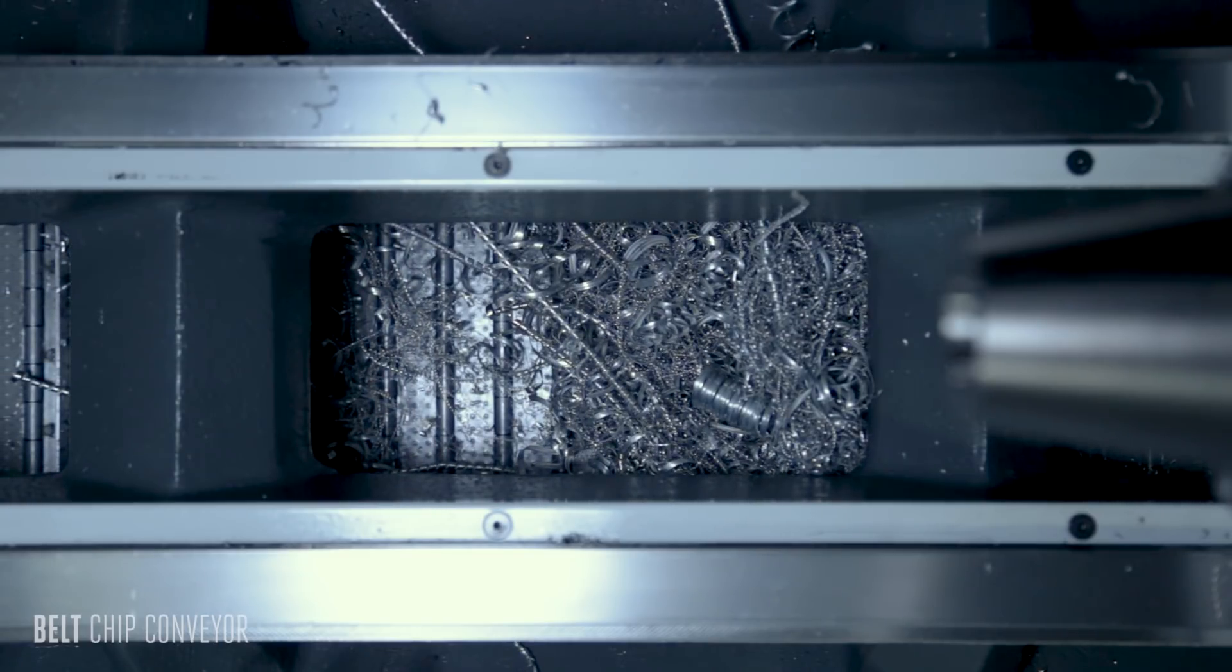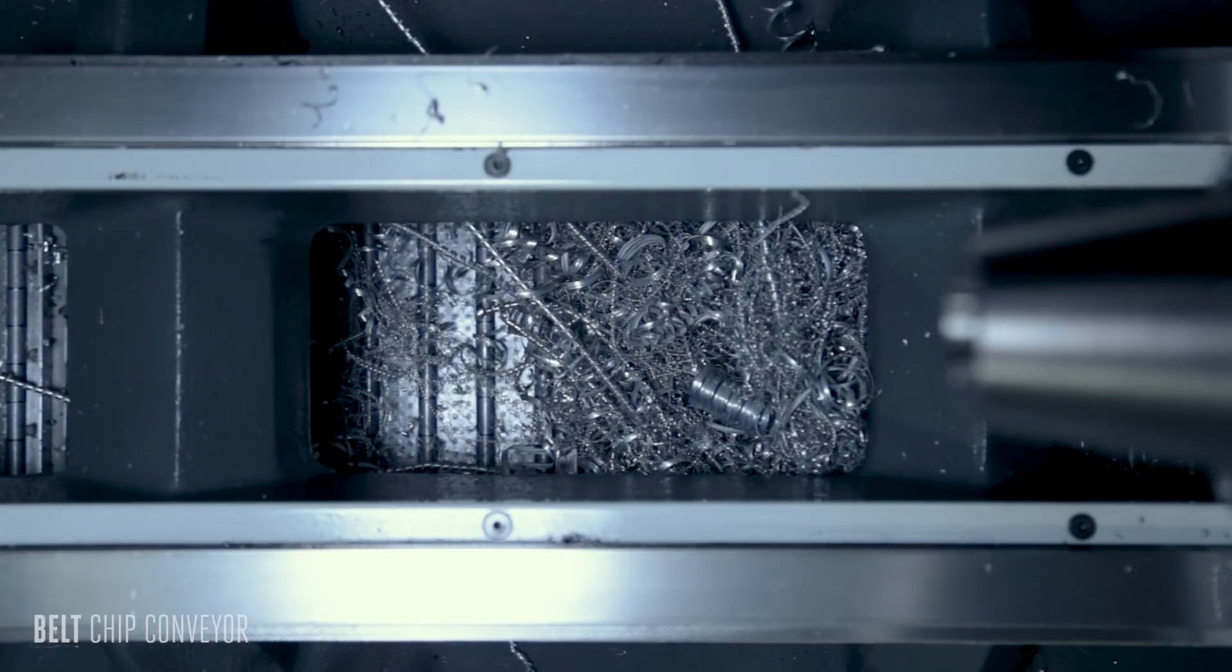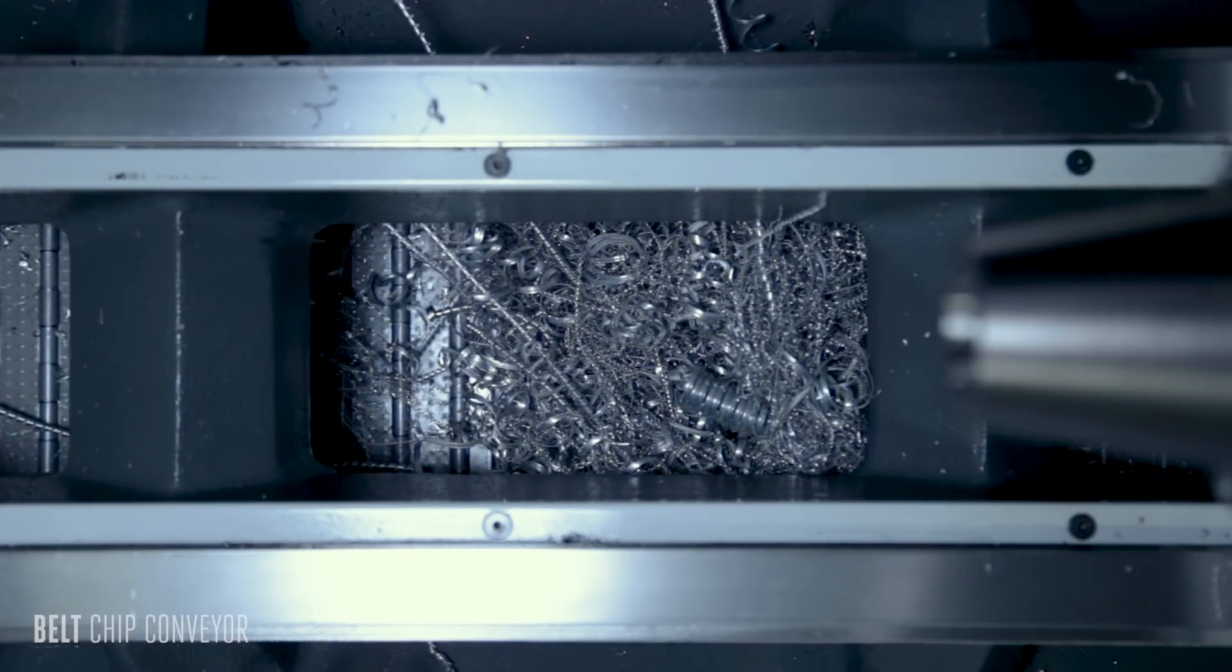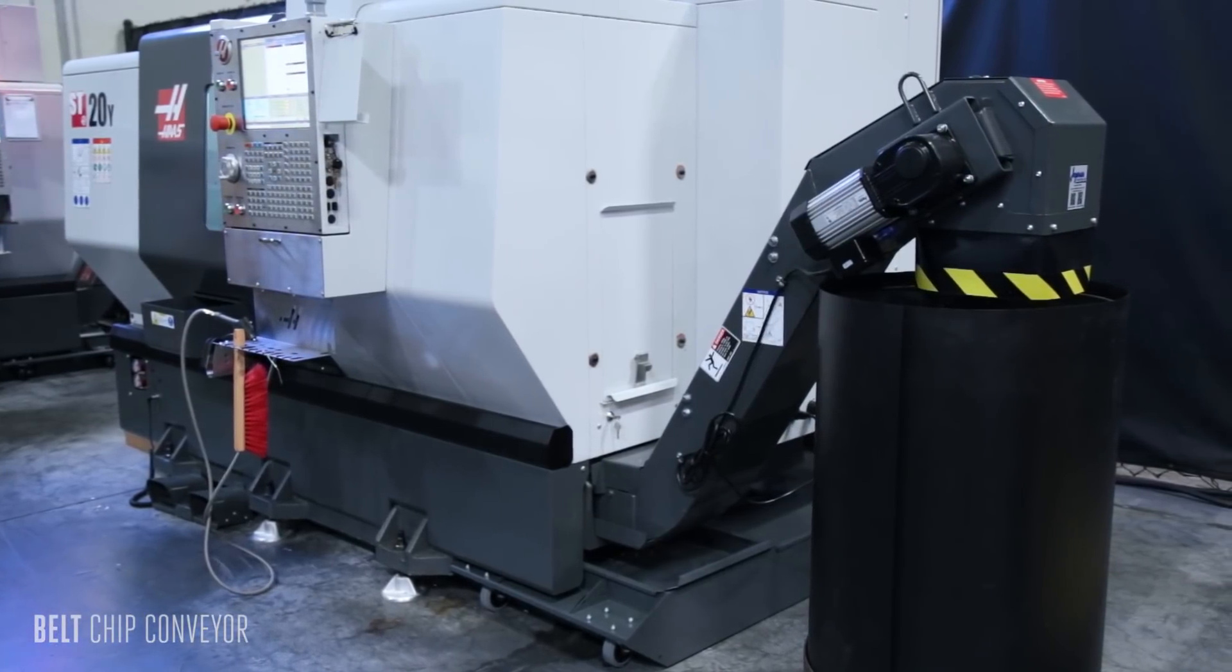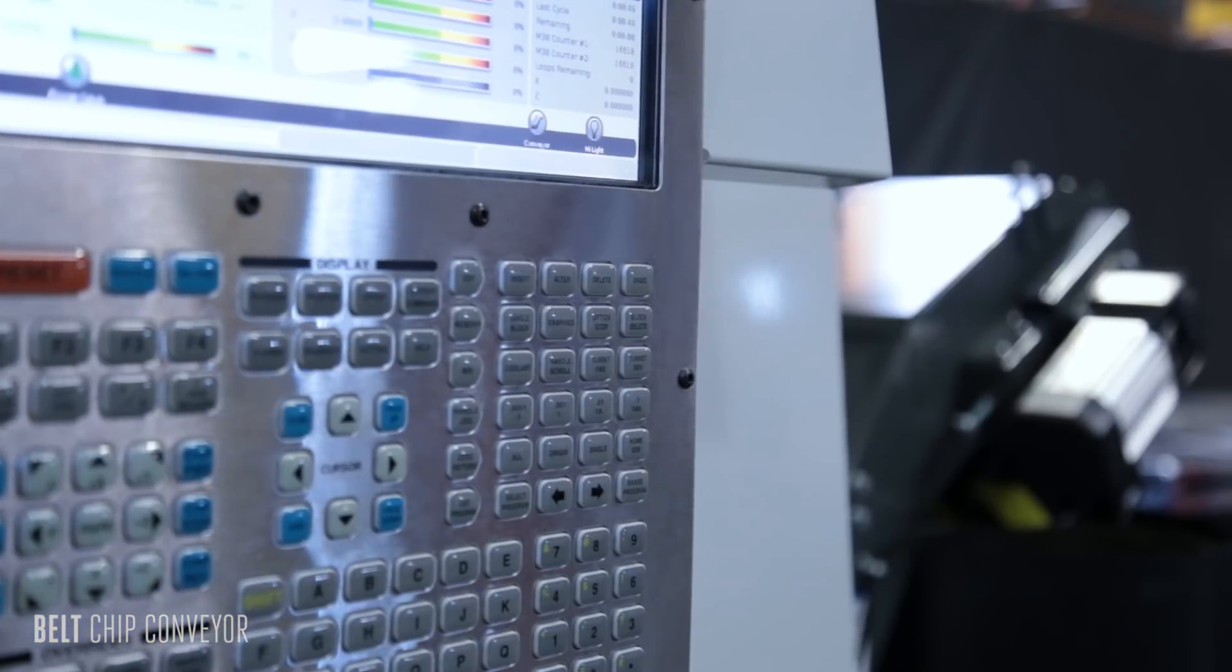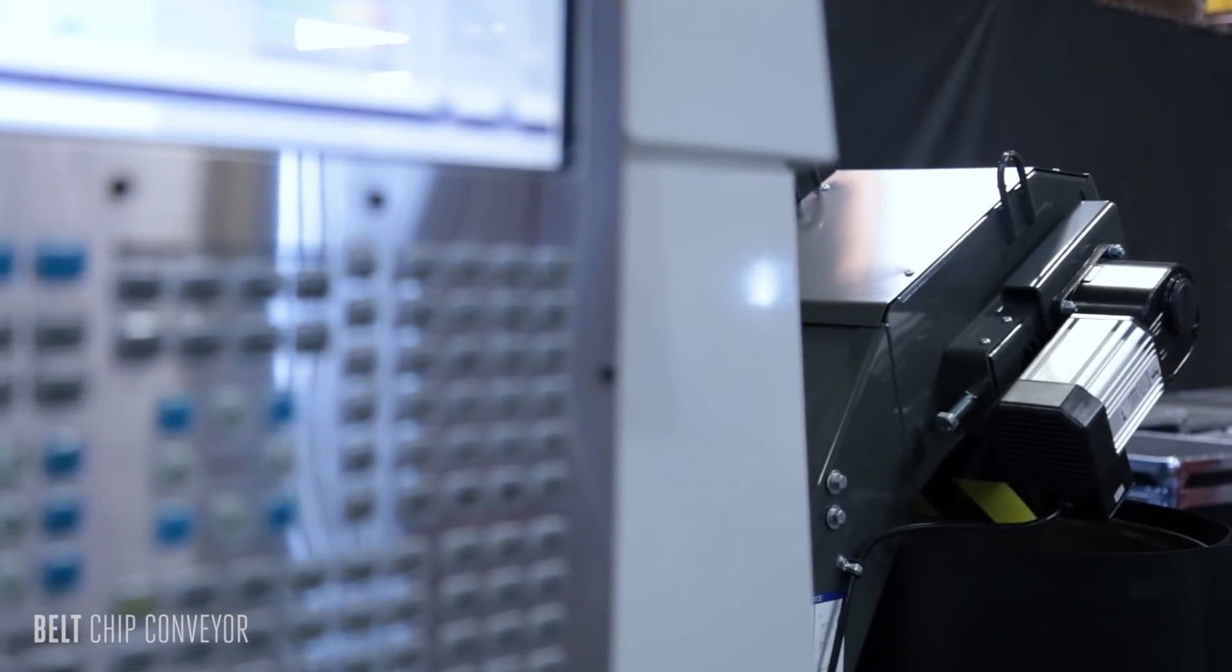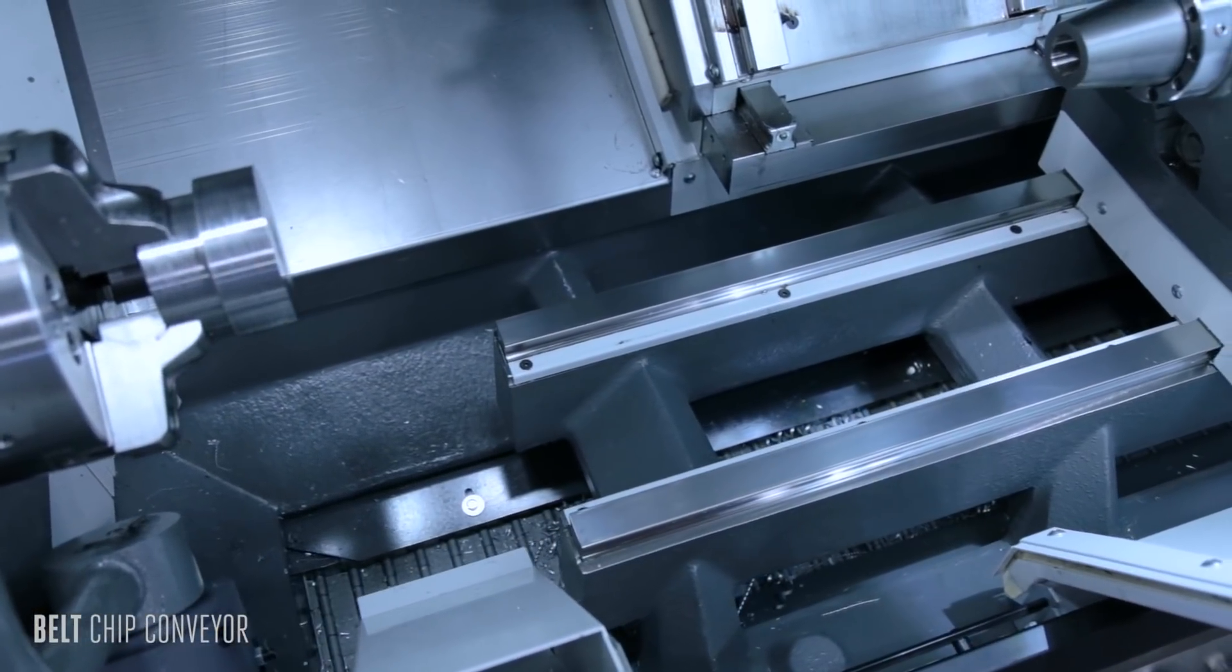If a buildup of chips occurs, the conveyor reverses itself automatically, helping to clear the obstruction. The Haas belt chip conveyor saves you time and money. Getting chips out of your machine doesn't have to be a chore. Let the belt chip conveyor do it for you.